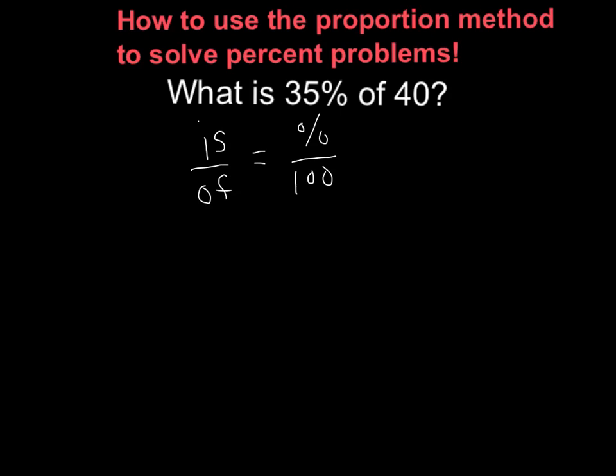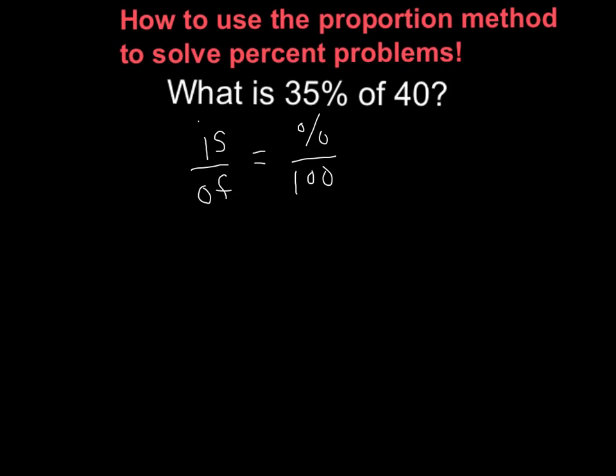So the first thing I do is I look for the percent symbol. The first thing I want to do is I'm going to look for the percent symbol. So I see the percent symbol next to the number 35. So I'm looking for 35%. Well, percent means per 100, so we are going to write 35 over 100 equals...